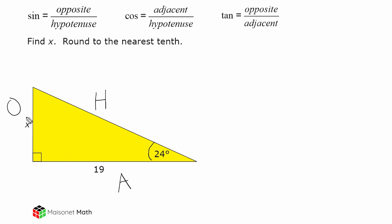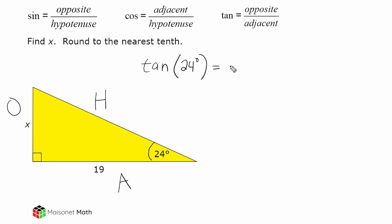Because we are dealing with x and this 19, we must use the opposite length and the adjacent length. The ratio that uses opposite and adjacent is the tangent ratio. So we're going to write: tangent of 24 degrees is equal to the length of the side that is opposite, which in this case is x, over the adjacent length, which is 19.